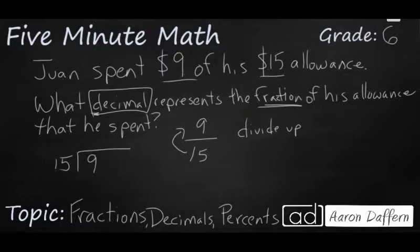So 15 goes into 9. It doesn't go. We're going to put a decimal here. And you can add as many zeros as you want to after the decimal because it doesn't change the value. And so that's going to go in six times and that's actually going to go in evenly.